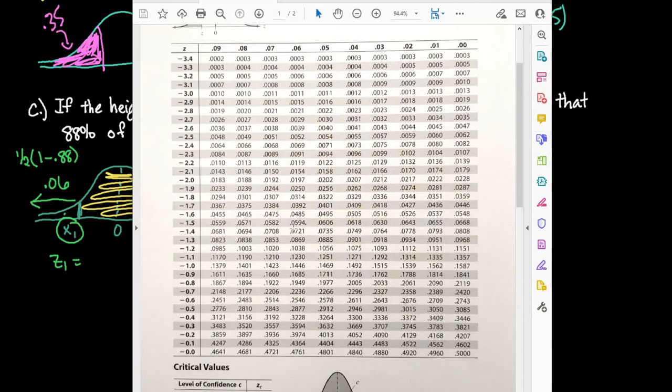So I'm going to look in my table for the closest thing to 0.06. So if I go through here we can see that it's in between 0.0594 and 0.0606 which means that it's exactly in the middle because both of those are 0.0006 away or six ten thousandths away from both of them. So technically it would be best to use negative 1.555 but I'm just going to go ahead and round it to the six.